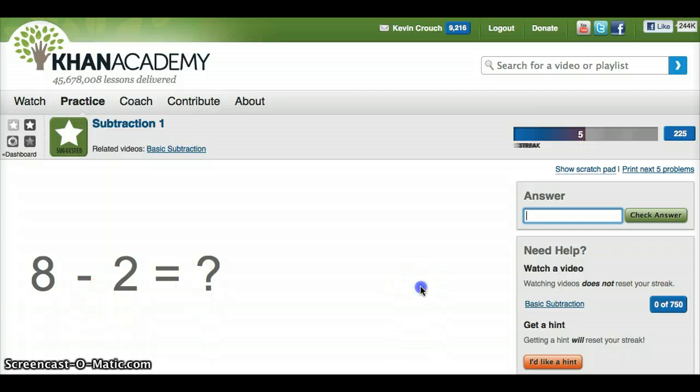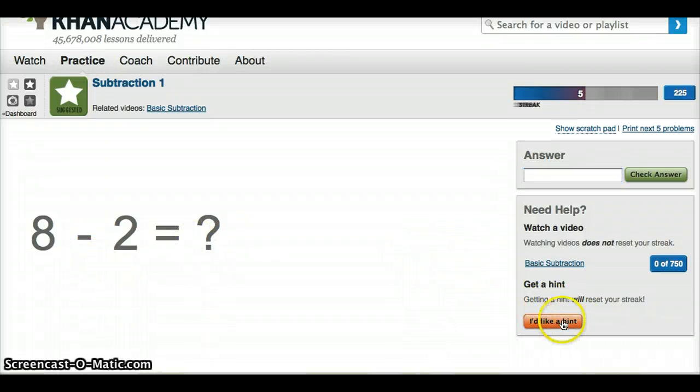If I don't know the answer, I'm able to come down here and click I'd like a hint. It will give me a hint of some kind. They gave me this number line, so I can then go, okay, 8 minus 2 is 6, and I can put that in.